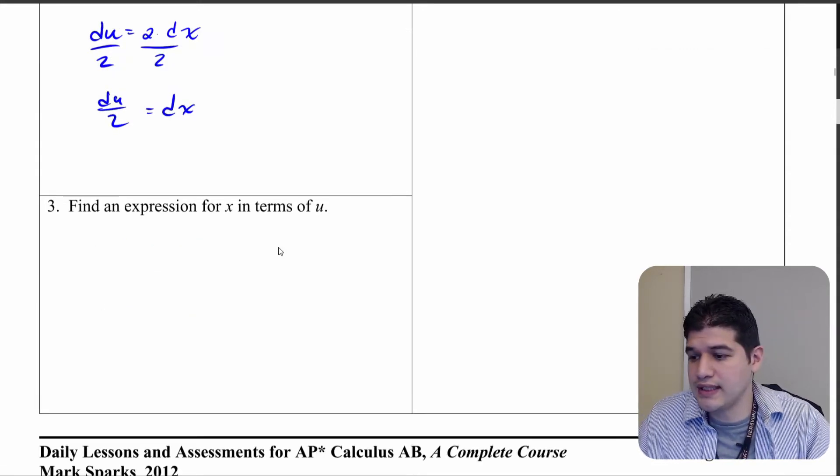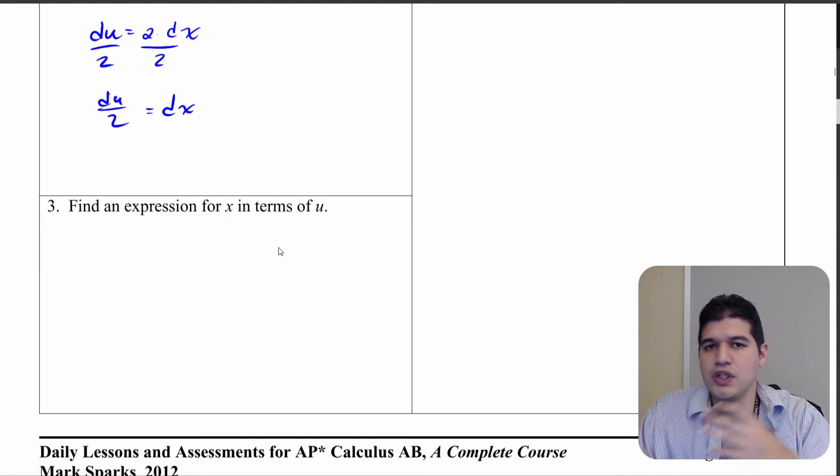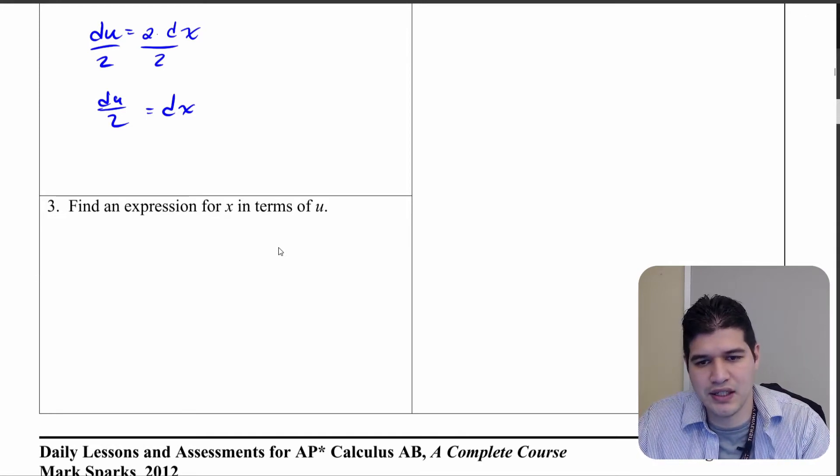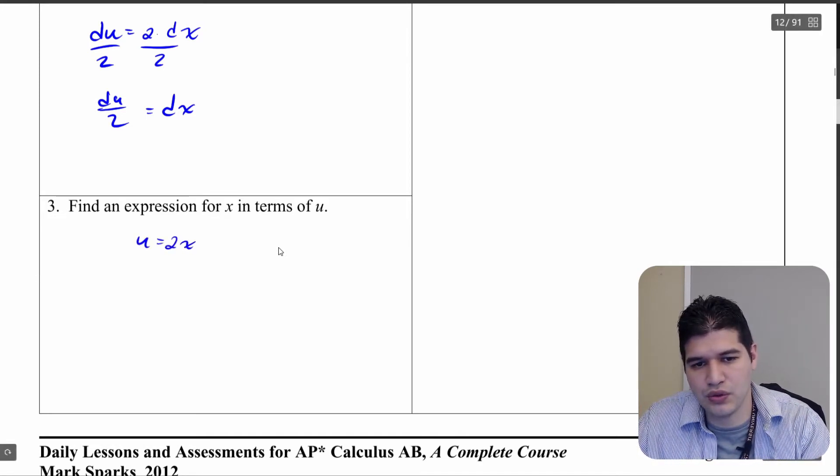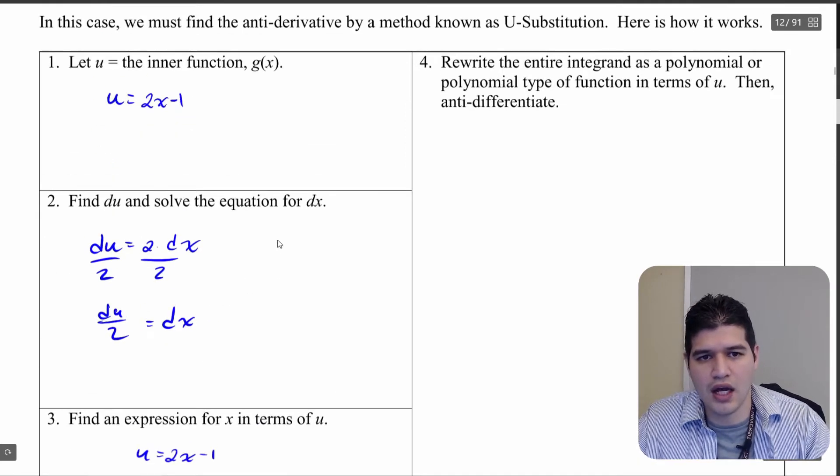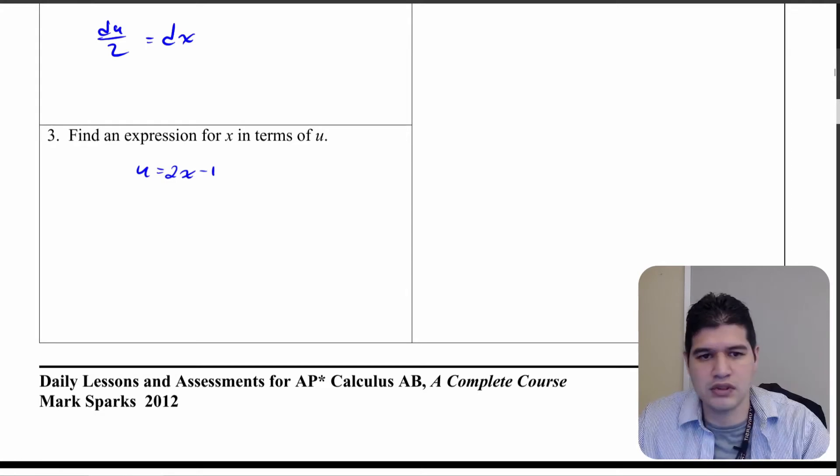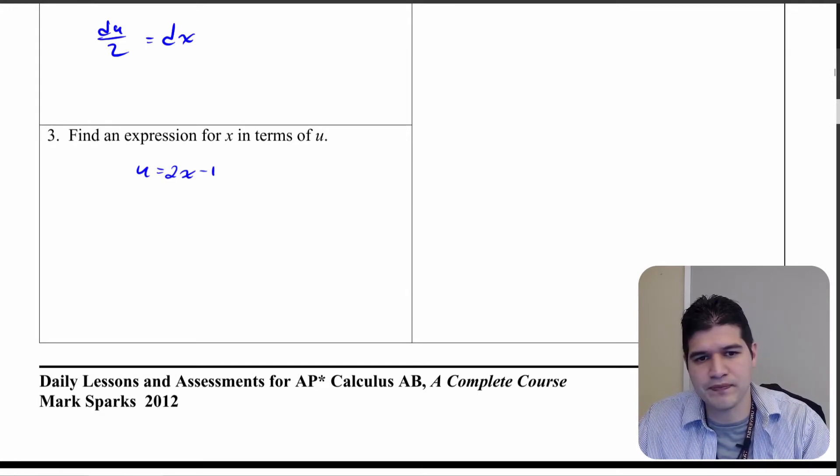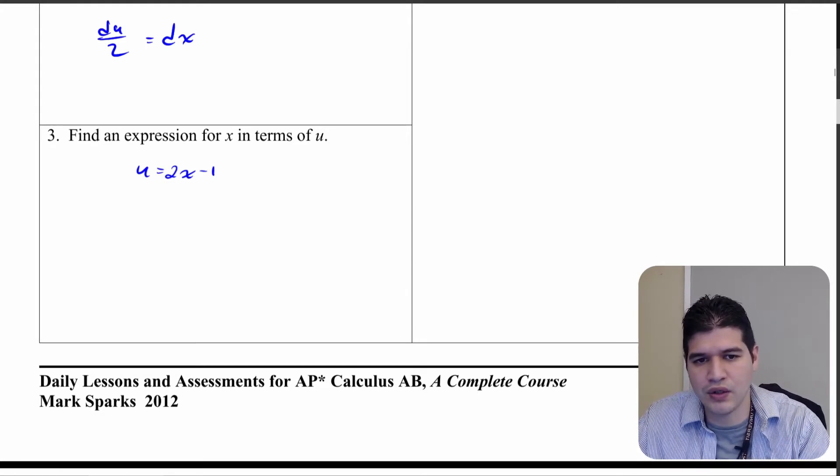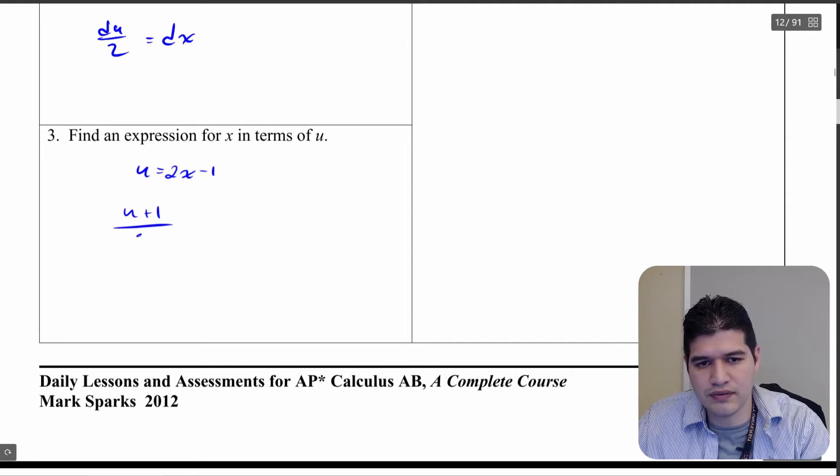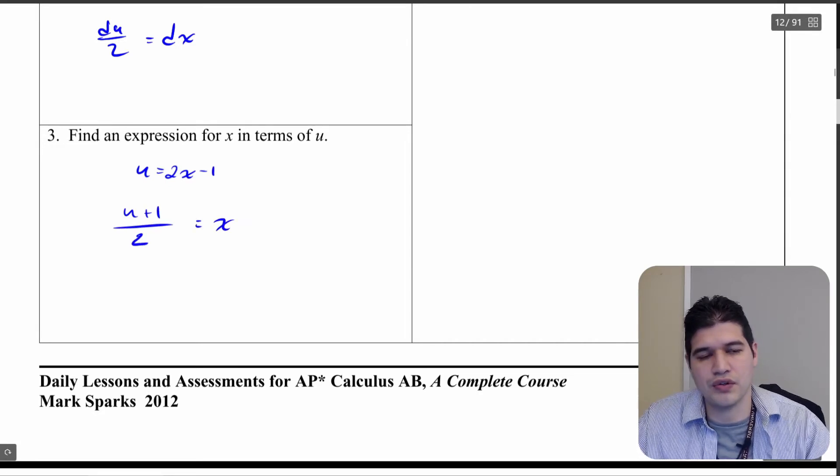So in this new part, what we're going to see is, what can we do with u? Can we manipulate this in any way? So we know that u is going to be 2x minus 1 here from earlier. I did make a little mistake. So if you caught that, it was just 2x minus 1. So let's solve for x here. Well, I can go u plus 1 divided by 2. Well, that would get me x.